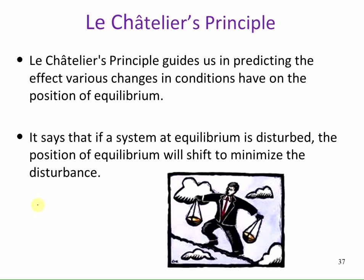Le Chatelier's principle is almost like a nice governing rule for life. Everybody has their own natural balance point as they divide up the different areas of their life, and if something gets out of whack, the other things have to compensate until you readjust and re-find your balance. But Le Chatelier's principle applies specifically to chemical equilibrium. It guides us in predicting the effect various changes and conditions have on the position of equilibrium. If a system at equilibrium is disturbed, the position of equilibrium will shift to minimize the disturbance — it tries to undo what you just did to it.